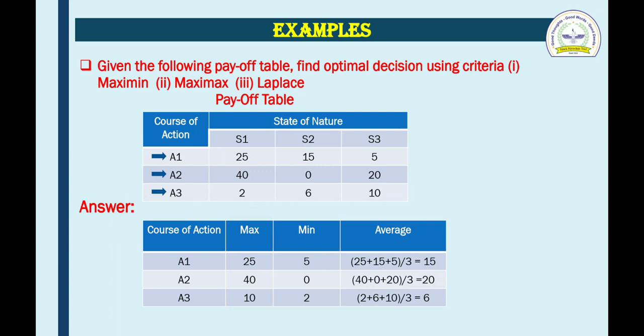Now we will solve some examples. Given the following payoff table, find the optimal decision using the criteria Maximin, Maximax, and Laplace. Remember: Maximin has two words — Max and Min; Maximax has Max and Max; Laplace is nothing but average. To solve this, we first provide the payoff table to help us make a decision. Here, the course of action includes A1, A2, A3, and the state of nature includes S1, S2, S3. Certain numerical values are given as alternatives to make the decision using the given criteria.